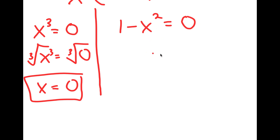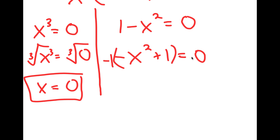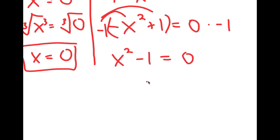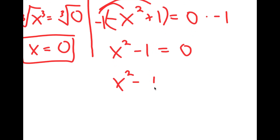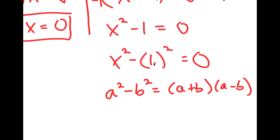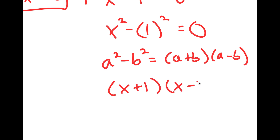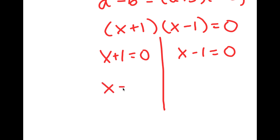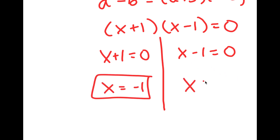For 1 minus x squared equals 0, I'm going to rewrite this as negative x squared plus 1 is equal to 0, then multiply both sides by negative 1. So I get x squared minus 1 equals 0. Now, 1 is the same thing as 1 squared, so I have x squared minus 1 squared equals 0. Using the difference of squares — a squared minus b squared equals a plus b times a minus b — this gives x plus 1 times x minus 1 equals 0. So x plus 1 equals 0 gives x equals negative 1, and x minus 1 equals 0 gives x equals 1.